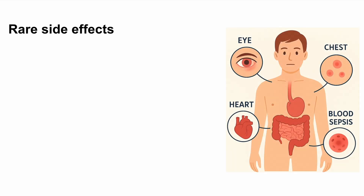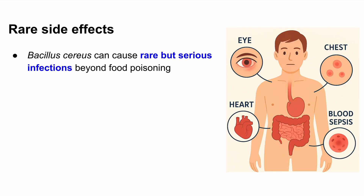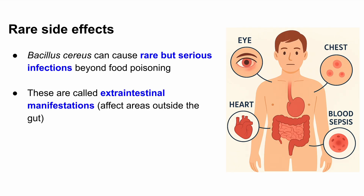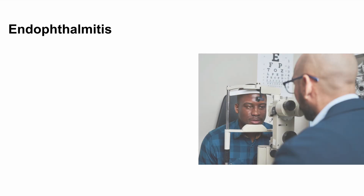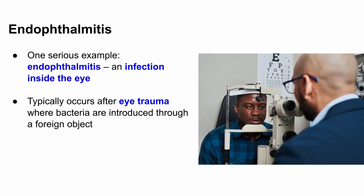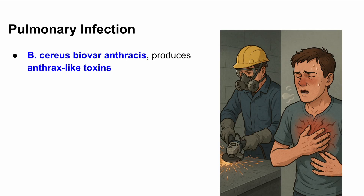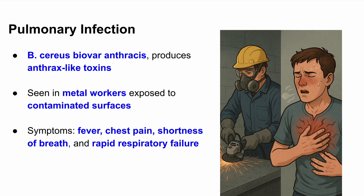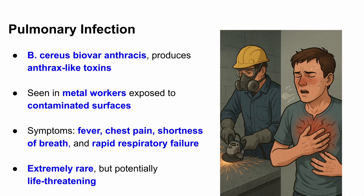Let's talk about those rare complications. Bacillus cereus doesn't just cause food poisoning — in rare cases it can cause serious extra-intestinal infections, meaning they affect parts of the body outside the gut. One of the most serious is endophthalmitis, an infection inside the eye, usually after trauma where bacteria are introduced through a foreign object. It's an emergency and can lead to permanent vision loss if not treated quickly. Another rare but dangerous condition is pulmonary infection, particularly from a subtype called Bacillus cereus biovar anthracis. This strain produces toxins similar to anthrax and has been documented in metal workers exposed to contaminated surfaces. These infections can cause fever, shortness of breath, chest pain, and rapid respiratory failure.